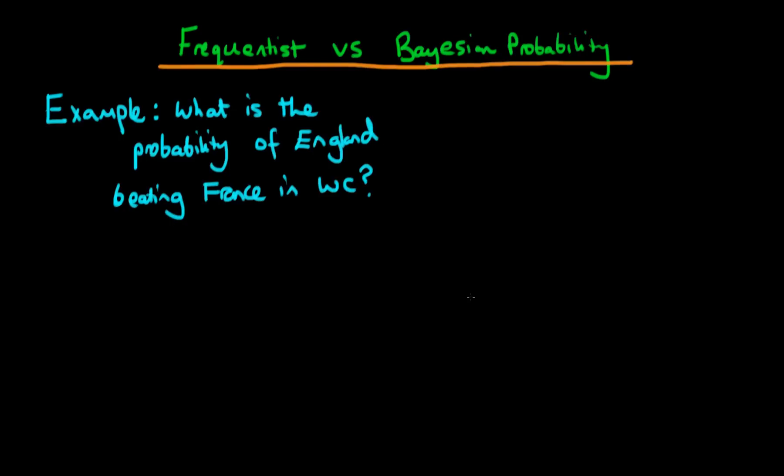In this video, I want to provide another example of how the frequentist and Bayesian views on probability differ, and how in this particular case the frequentist view actually runs into a few problems. The example I'm going to be talking about is: what is the probability of England winning a football game against France in the World Cup?